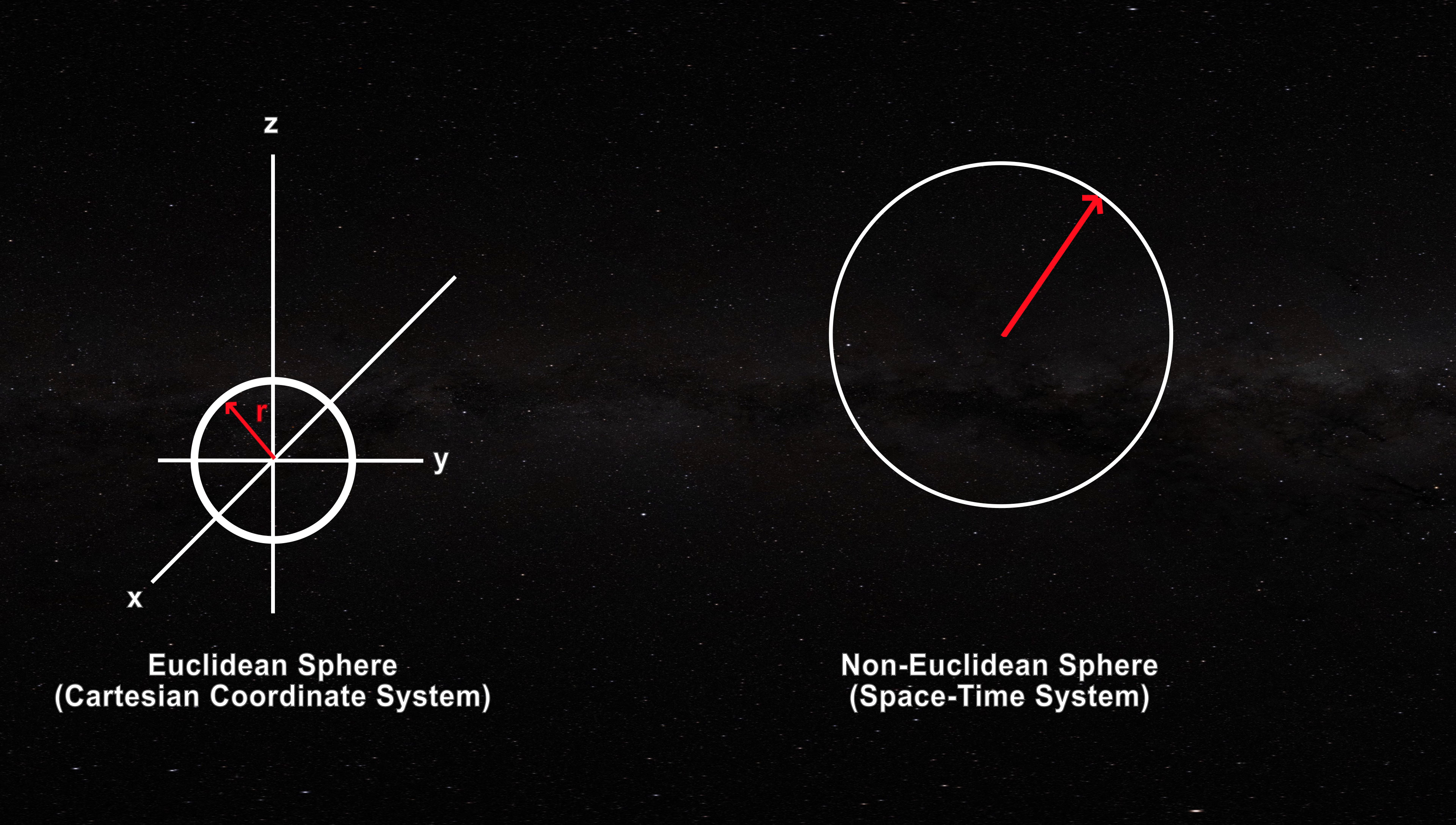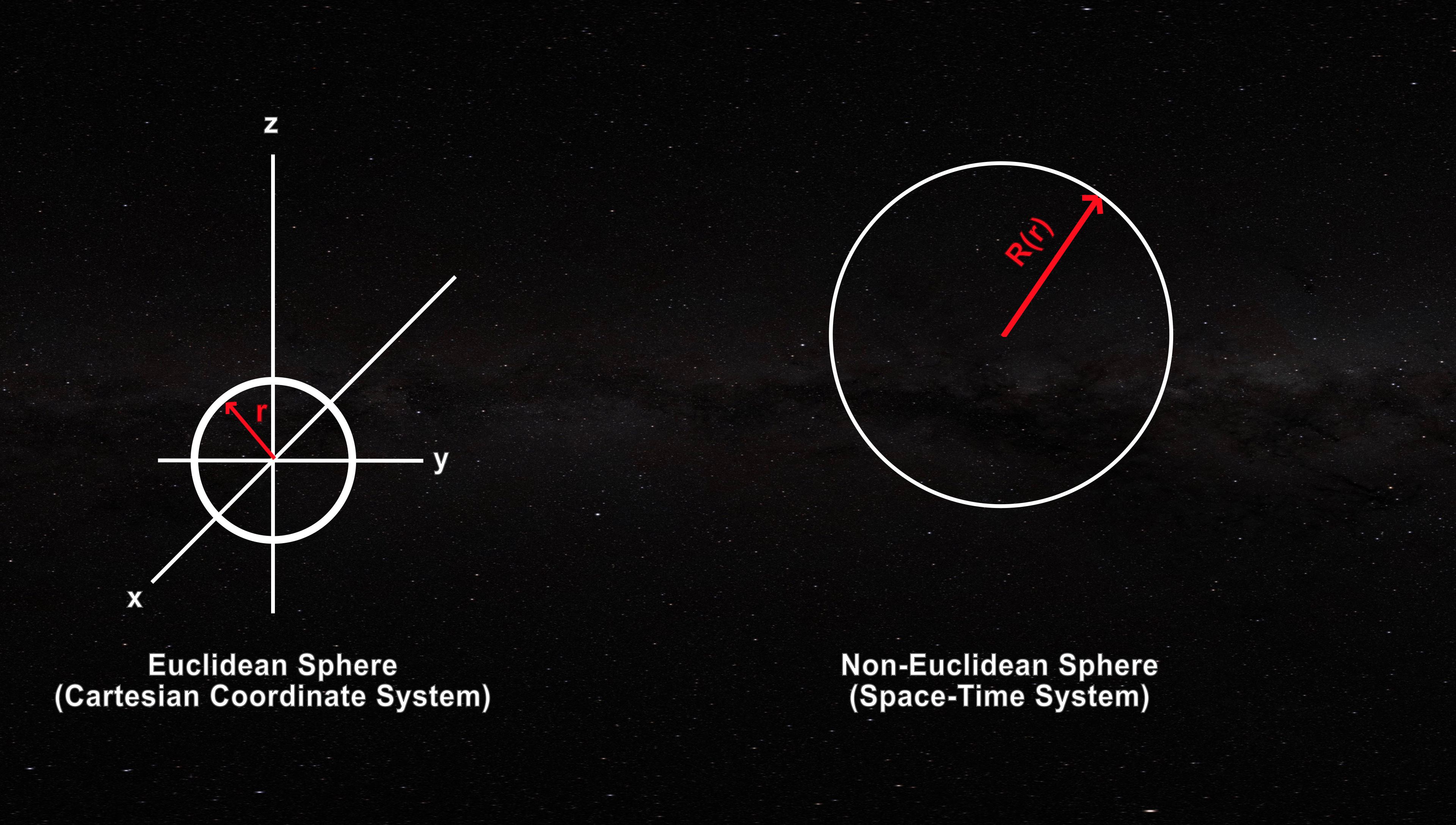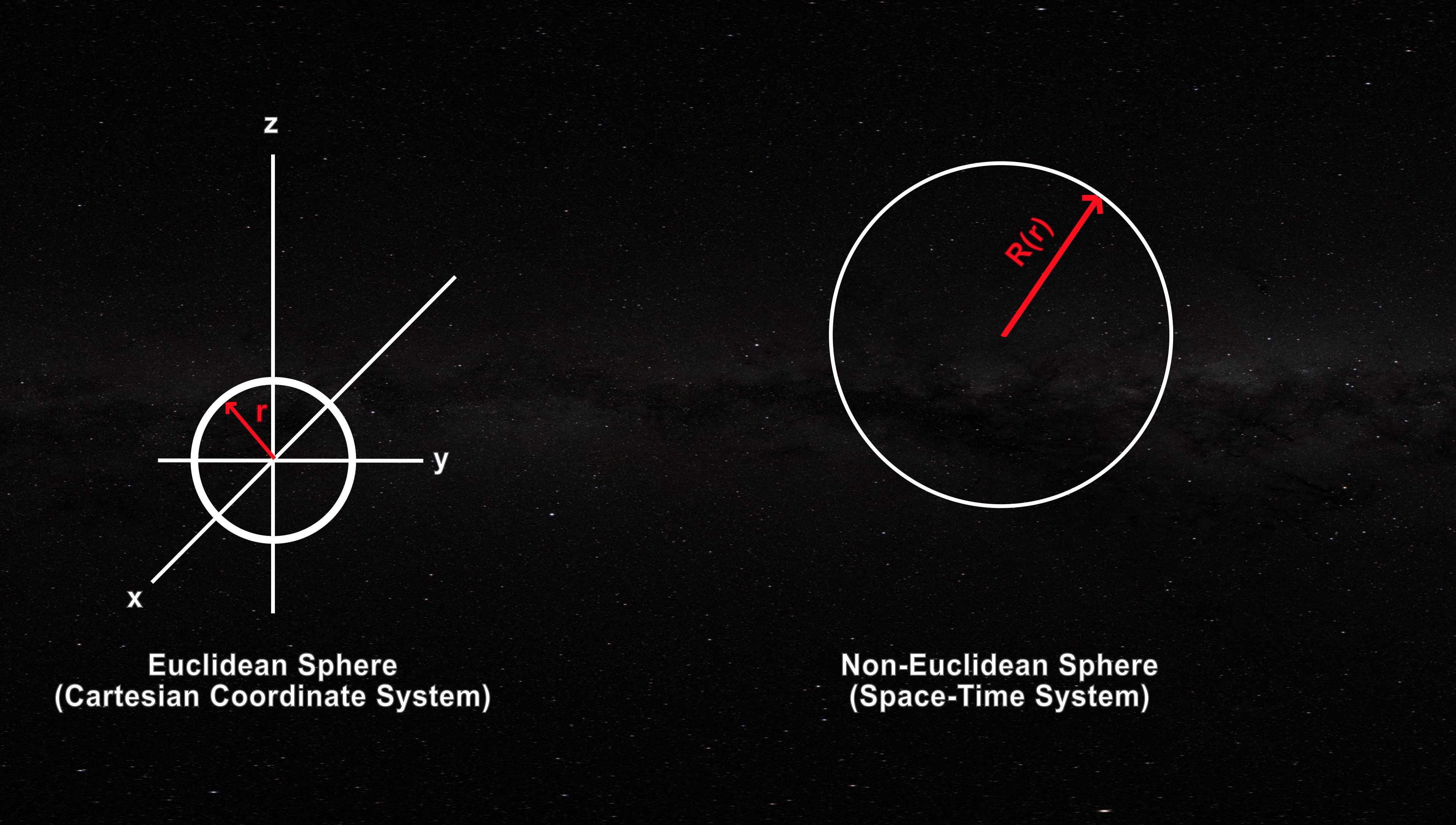This produces an equation for radius big R of the non-Euclidean sphere as a function of little r from the original Euclidean sphere. Little r is not the radius of the non-Euclidean sphere. It is not even a distance there.